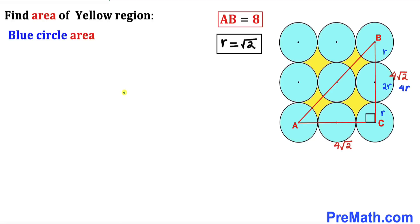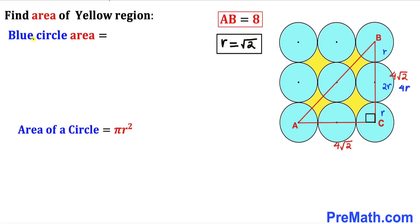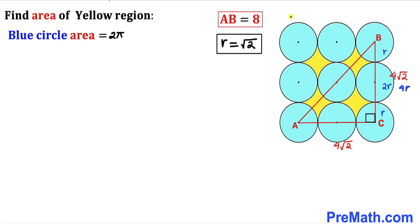Now let's calculate the area of each of these blue circles. Recalling the area of a circle formula: Area equals π r squared, where r is the radius. In our case the radius is √2, so the blue circle area becomes π times (√2) squared, which gives us 2π. So the area of each circle turns out to be 2π.